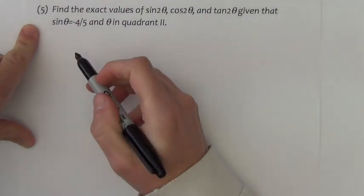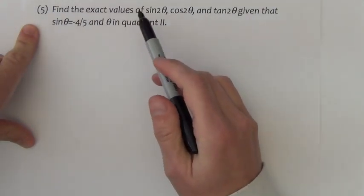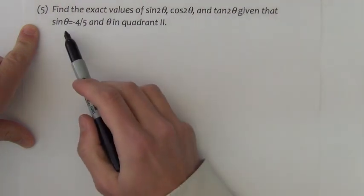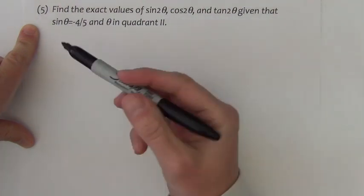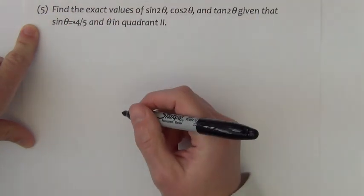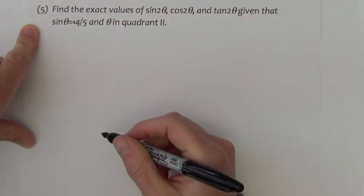On this next problem we've got something a little bit different now. Find the exact values of sine 2θ, cosine 2θ, and tan 2θ given that sine of θ is, there's a typo here, let's change that to positive 4 fifths, and θ is in quadrant 2.